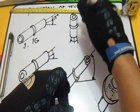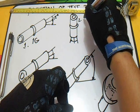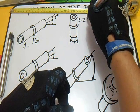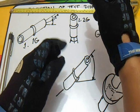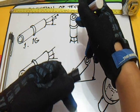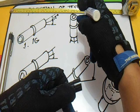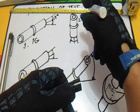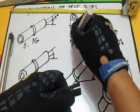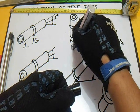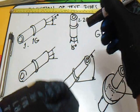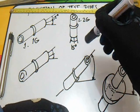Next, this is 2G. This is a vertical pipe and not rotated. This is also 15 degrees.